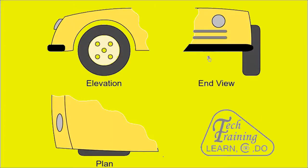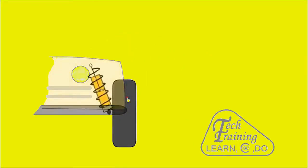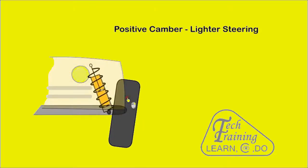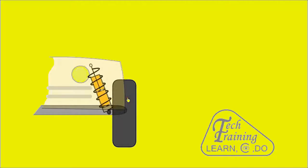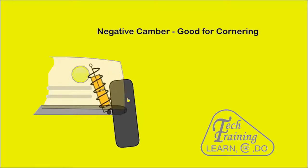When viewed from the front, the tilt of the wheel is called camber. With the wheel tilted out at the top, it is called positive camber. With negative camber, the bottom of the tyre is farther out than the top. This helps to improve cornering ability.